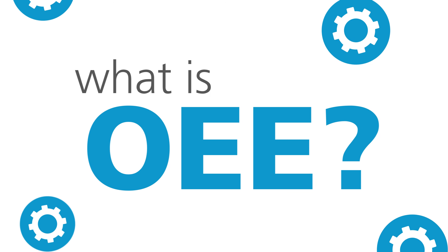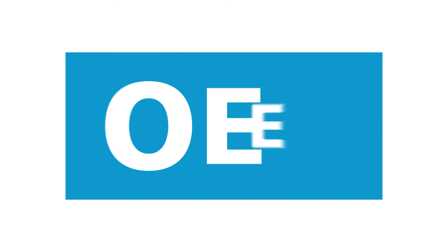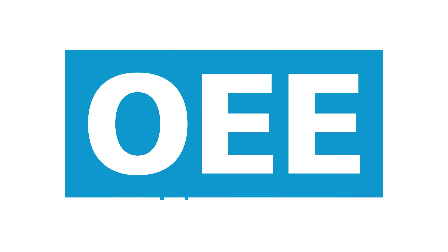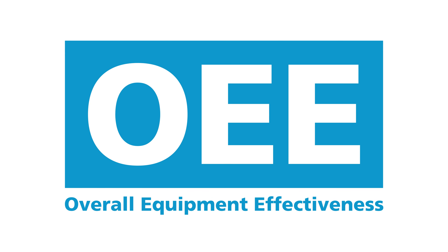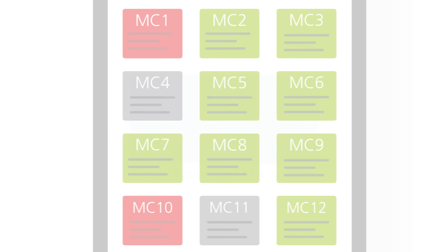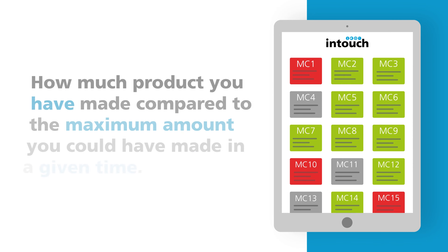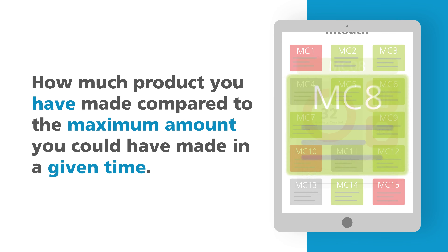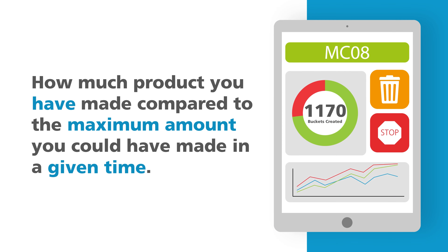What is OEE? OEE, or overall equipment effectiveness, is simply an expression of how much product you have made compared to the maximum amount you could have made within a given time.